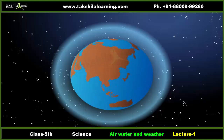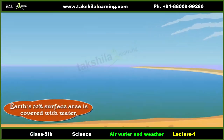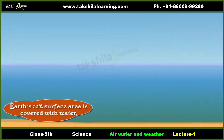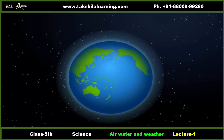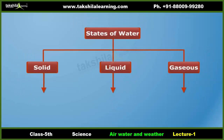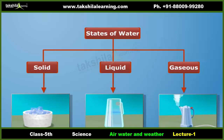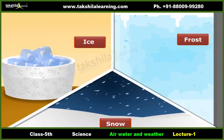Water is the most abundant substance present on the earth. In fact, our earth's 70% surface area is covered with water. Do you know earth is also called the blue planet? Because when seen from space it appears blue due to water. Water exists in three states: solid, liquid and gaseous.